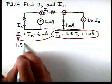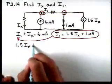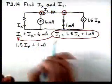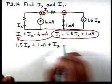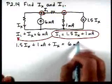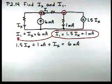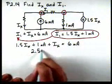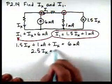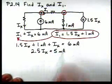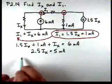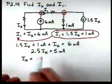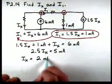we'll have 1.5 Ix plus 1 milliamp plus Ix equal to 6 milliamps. Now we have one equation and one unknown. So we have 2.5 Ix equal to 5 milliamps. And therefore, Ix has to be 2 milliamps.